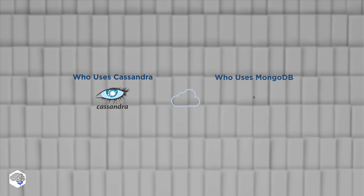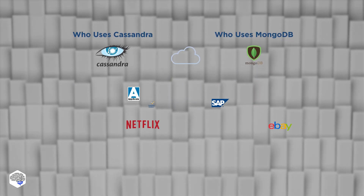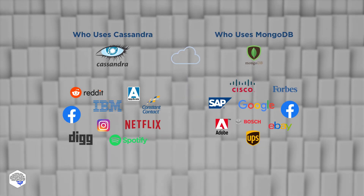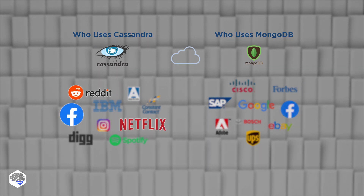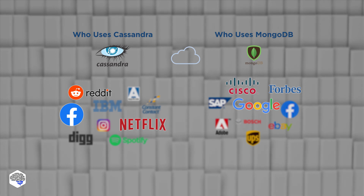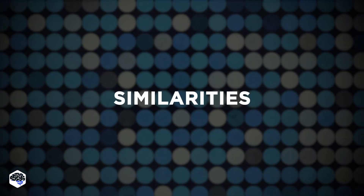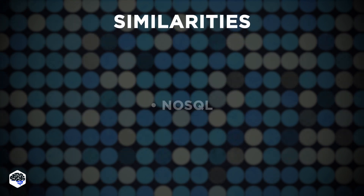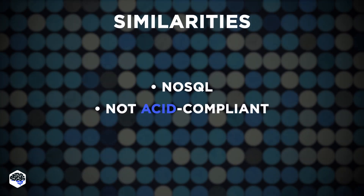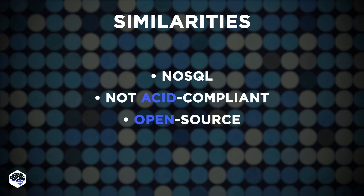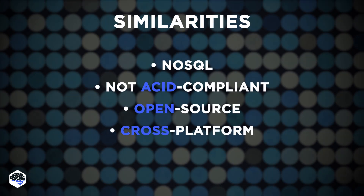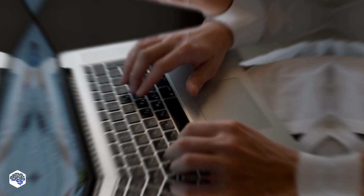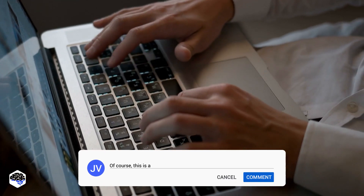Both Cassandra and MongoDB enjoy popularity among thousands of well-known organizations like Reddit, Facebook, and Netflix for Cassandra, and Forbes, Google, and Cisco for MongoDB. Let us list their similarities: they both belong to the NoSQL family, they are not ACID compliant, they are open source, they are both cross-platform solutions and support a variety of Windows and Linux, and they also support macOS platforms.